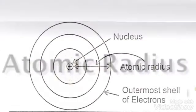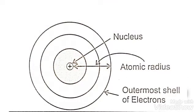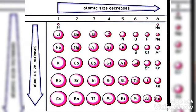The first property is atomic radius. It is the distance between the nucleus and the outermost shell of an atom, also regarded as atomic size. Atomic size increases in a group from top to bottom because a new shell gets added at each step. This results in the increase of the distance between the nucleus and the outermost shell, thus increasing atomic size.